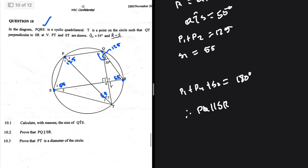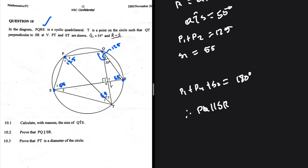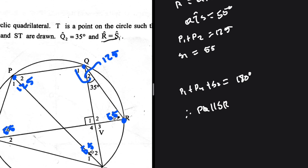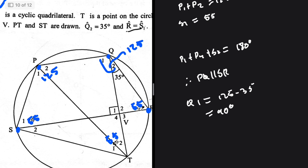Now we must prove that PT is the diameter of the circle. We need to show that something equals 90 degrees, because a chord is a diameter if it subtends 90 degrees at the circumference. Q1 plus Q2 equals 125, and Q2 is 35, so Q1 equals 125 minus 35, which is 90 degrees. Therefore PT is the diameter, as it subtends 90 degrees at the circumference.